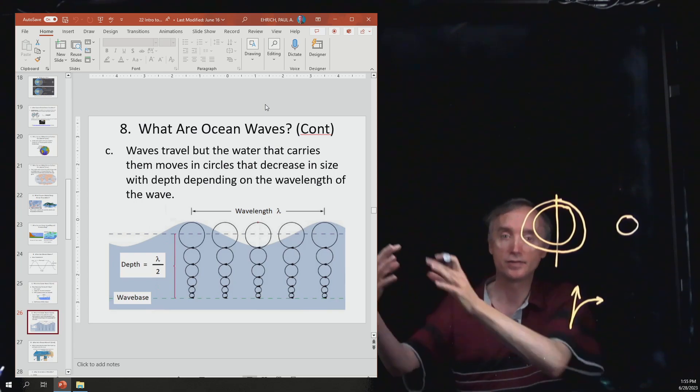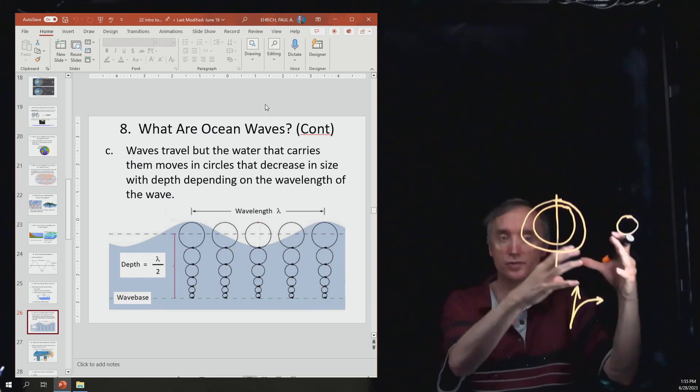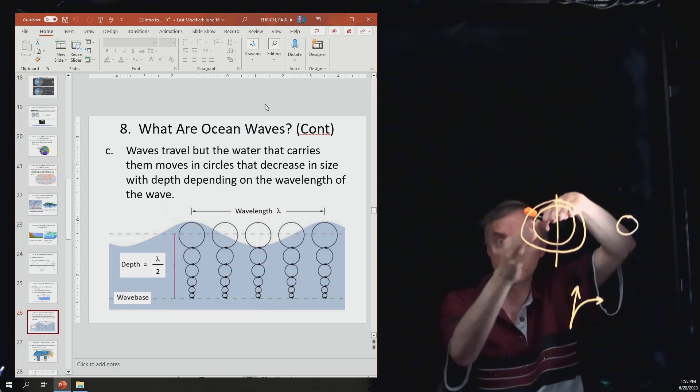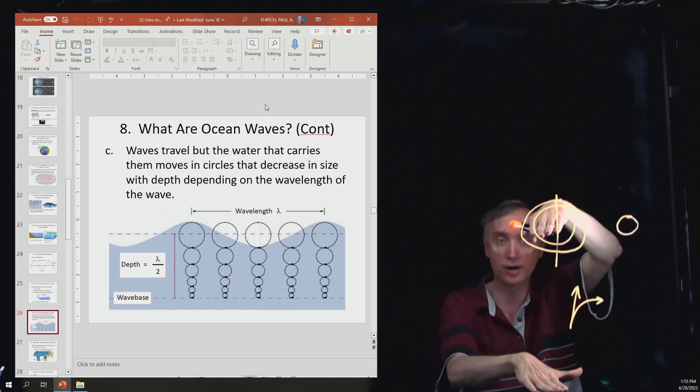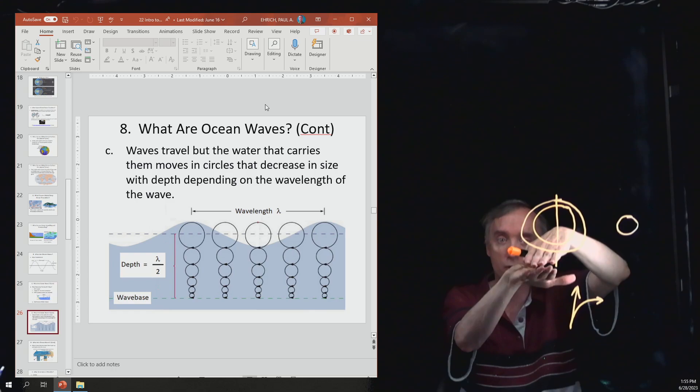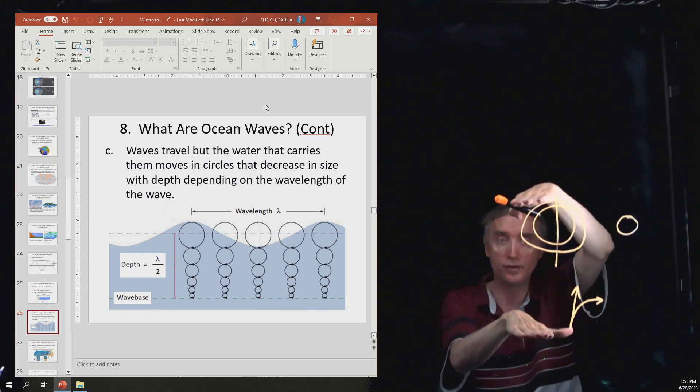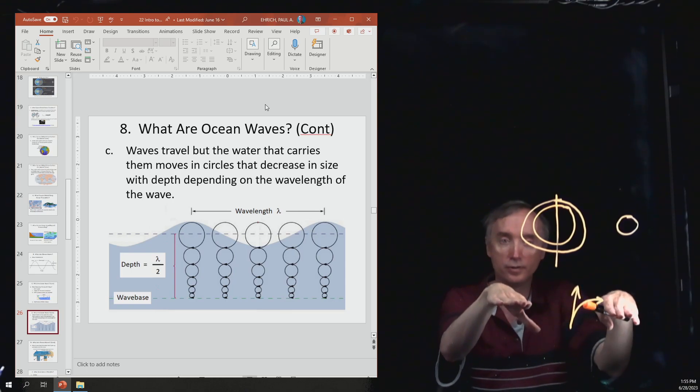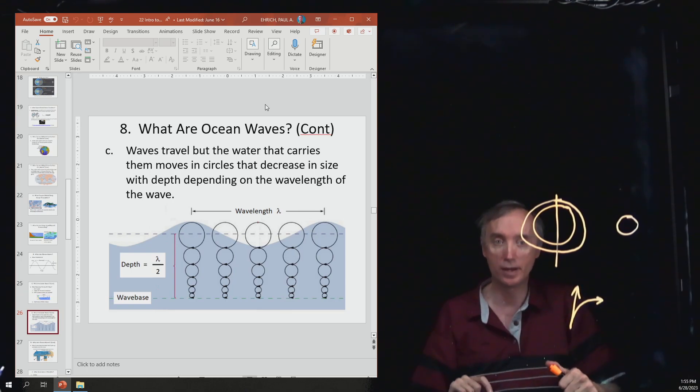Now why is this important? Because as a wave approaches the shore, then the distance between the top of the water and the ground down here is getting smaller and smaller and smaller. So eventually the bottom of the ocean floor corresponds to the wave base.